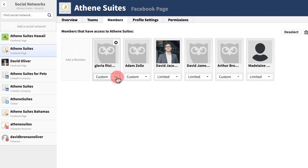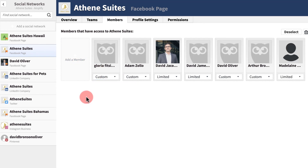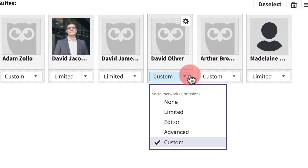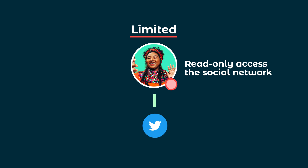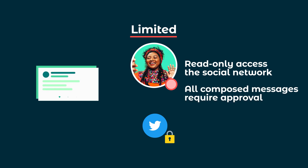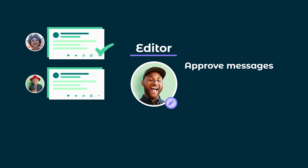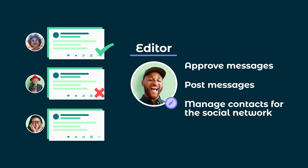Click to add a new member and assign permissions. There are four levels of social network permissions. Team members with limited permissions have read-only access to the social network, and any messages they compose must be approved before being posted. Those with editor permissions can approve unsent messages, post their own messages, and manage contacts.